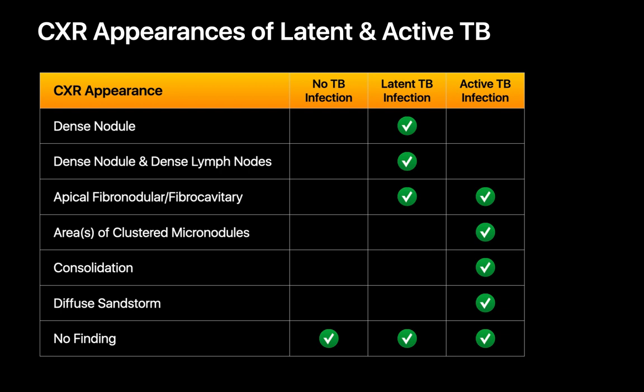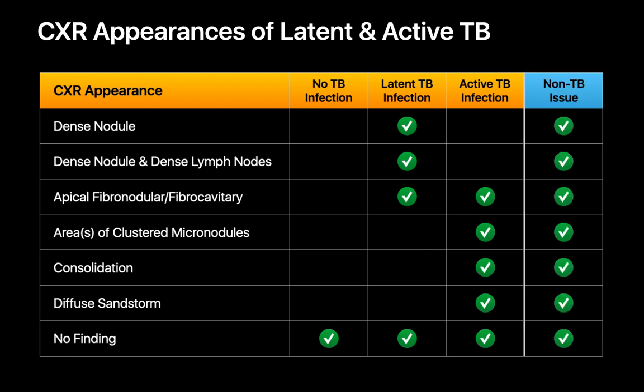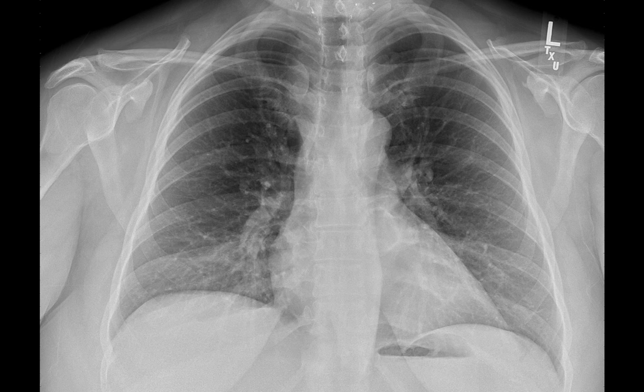To summarize, there are all these different chest x-ray presentations of latent and active TB infections, and you can begin to see the problem with chest x-ray as an exclusive test for TB. Not only can active and latent TB infections present as no finding or normal, but non-TB disorders can present with any of the imaging features that latent or active TB can present with. That makes chest x-rays a poor diagnostic test for TB in and of itself. However, as part of a more comprehensive sequence of tests for diagnosing tuberculosis, chest x-rays have an important role.